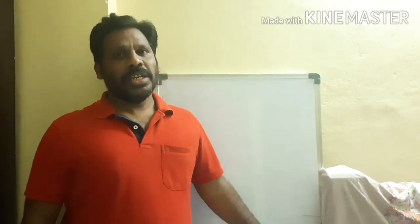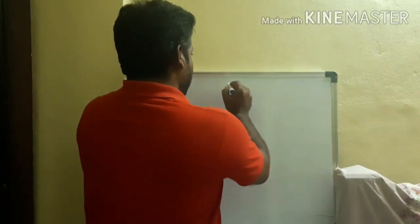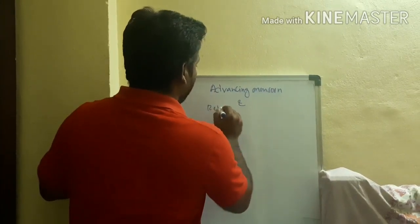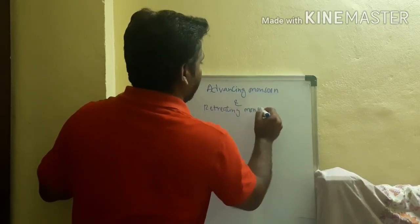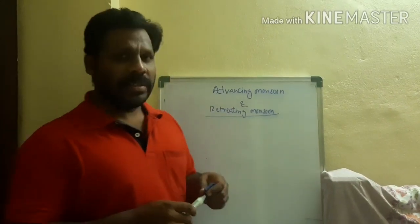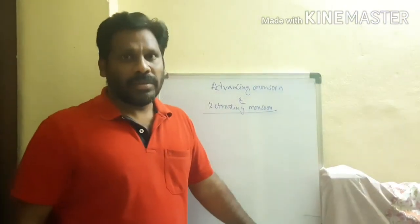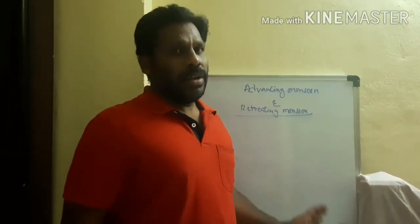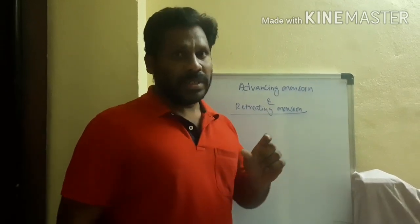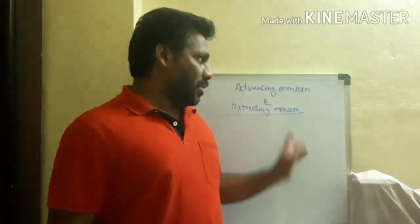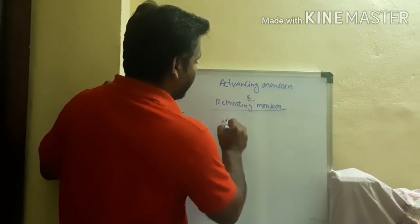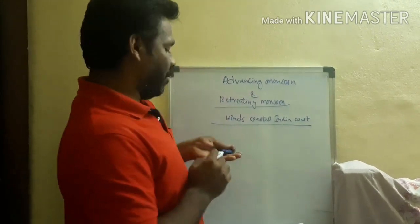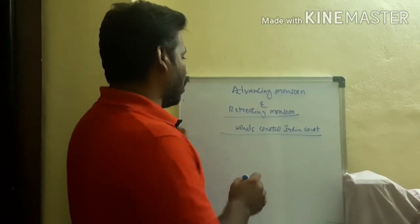Today our topic is the climate of India, specifically advancing monsoon and retreating monsoon. First we discuss about the advancing monsoon. The climate of India is influenced by monsoon winds. The traders and sailors who came to our country while crossing the seas and oceans observed the seasonal winds. Through these sea routes, Arab sailors came to our country and kept the name 'monsoon' for these seasonal winds.